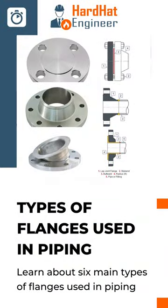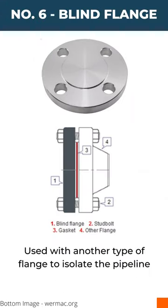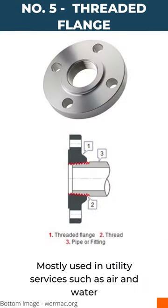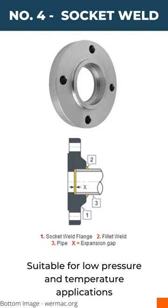Many types of flanges are used in piping, but these six types are the main ones. Number six is the blind flange — these flanges are used with another type of flange to isolate the pipeline. Number five is the threaded flange, which is mostly used in utility services such as air and water.